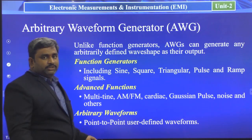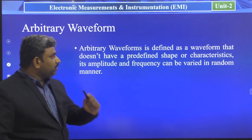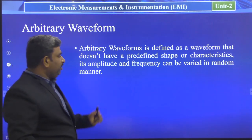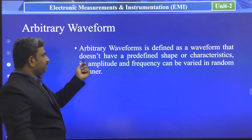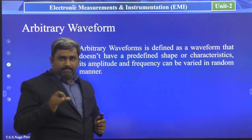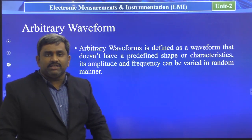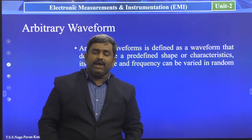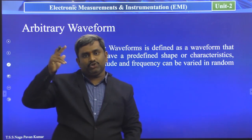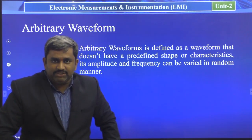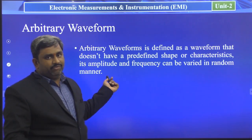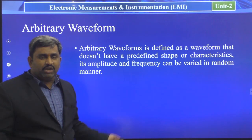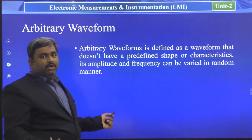The basic definition of an arbitrary waveform: an arbitrary waveform is defined as a waveform that does not have a predefined shape or characteristics. This arbitrary waveform does not have any shape or characteristics. If you see the function generator, it has a sinusoidal or triangular waveform with defined characteristics. But whichever signal we generate from this arbitrary waveform generator does not have any fixed characteristics or shape — we cannot say this is the shape for an arbitrary waveform.